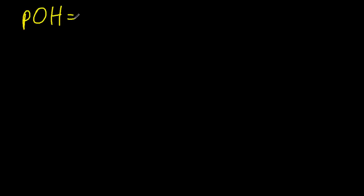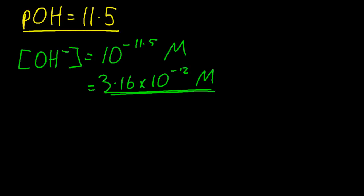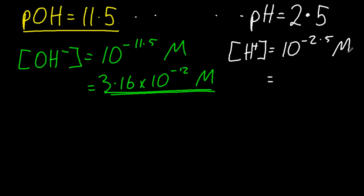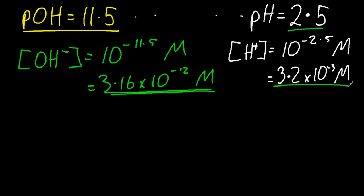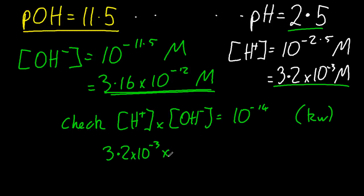Let's try one with a non-integer. If the pOH is 11.5, then the hydroxide ion concentration is 10 to the minus 11.5 molar. You can't leave it like that — you have to press the exponent key and get the actual number; they won't accept it otherwise. That gives 3.2 times 10 to the minus 3 molar. And since pOH and pH must add to 14, that gives a pH of 2.5. Let's do a quick double check with Kw: H⁺ times OH⁻ equals 10 to the minus 14. Pop those numbers in — it works out. Equation confirmed.